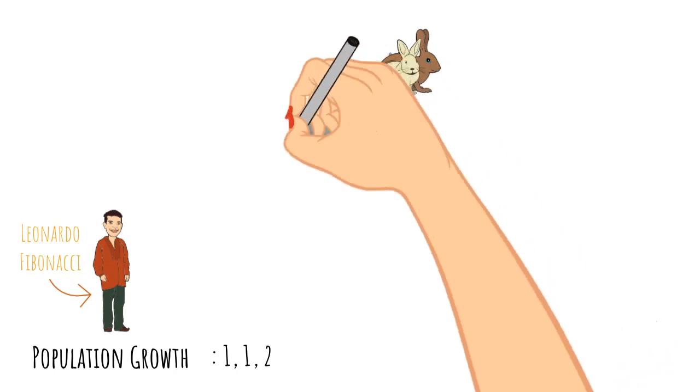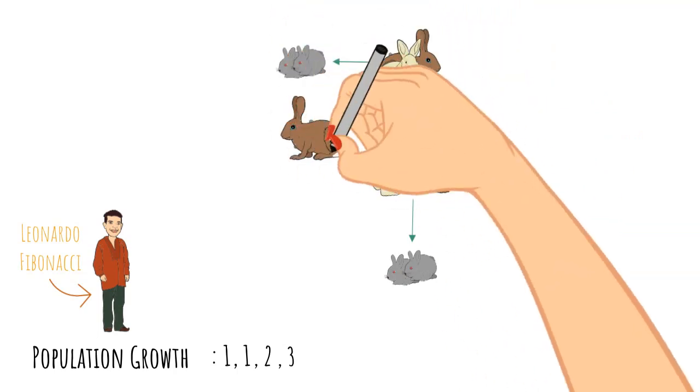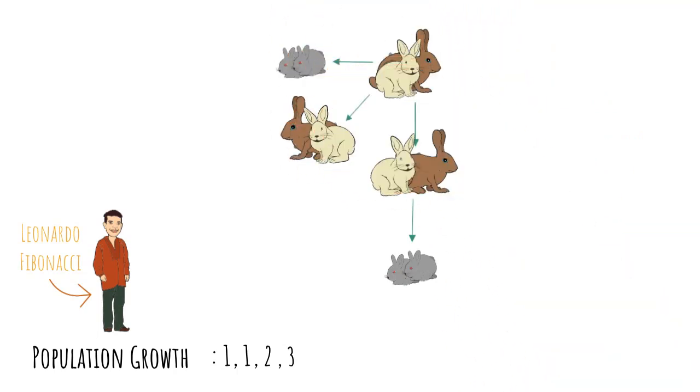Anyhow, in month four, our original rabbits will have some more baby rabbits and our baby rabbits will become adult rabbits given a total of three pairs. Now they can reproduce so they have baby rabbits and so do our original pair and a pair of babies become adults. This gives a total of five pairs of rabbits.